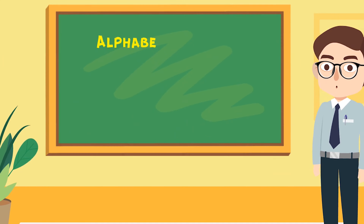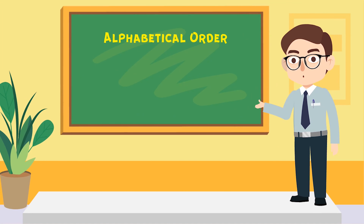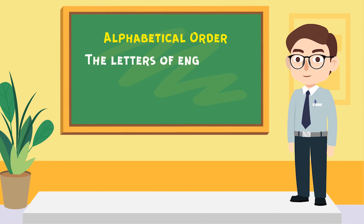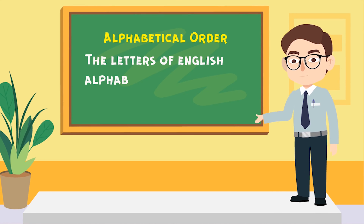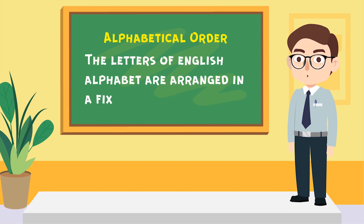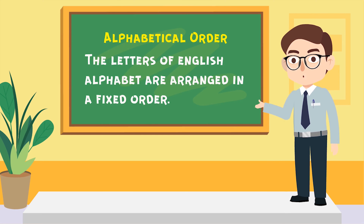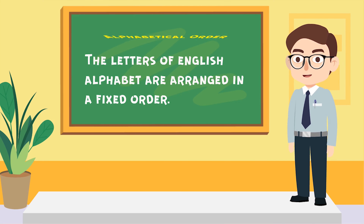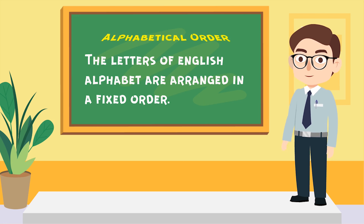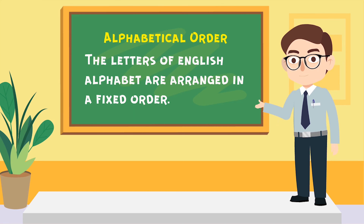Alphabetical order. The letters of the English alphabet are arranged in a fixed order called alphabetical order, or ABC order.